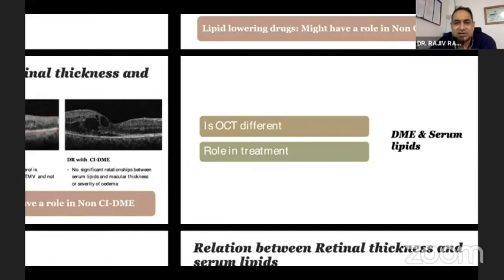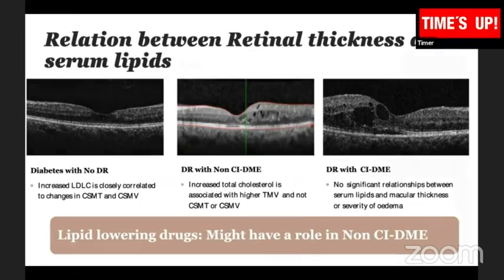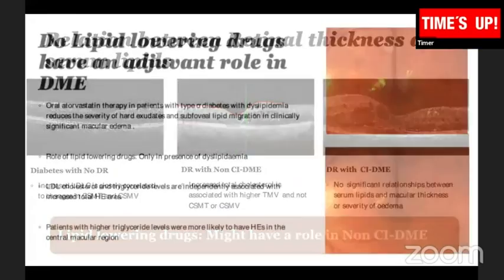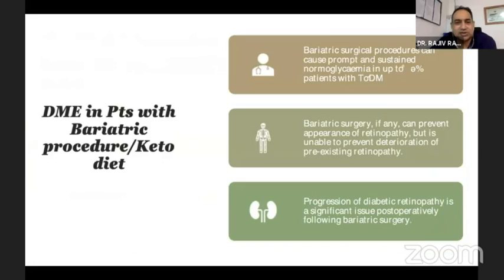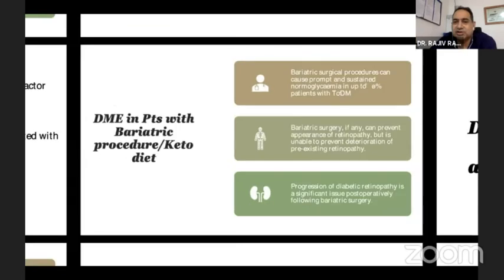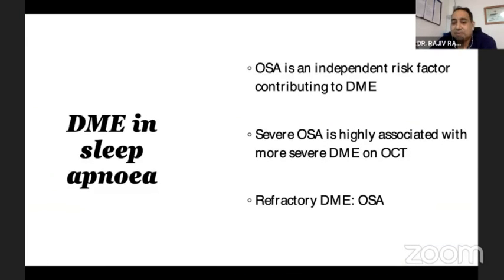Lipids are important — there are OCT parameters related to lipids. In terms of infections, don't inject. Keto diet and bariatric procedures cause quick reduction but again there is worsening of DME. Sleep apnea is an independent risk factor for DME, and especially in refractory DME, don't hesitate to get a sleep study done — many times they have severe OSA, which may be the contributory factor.